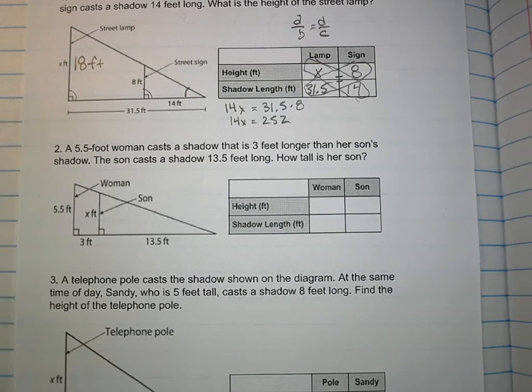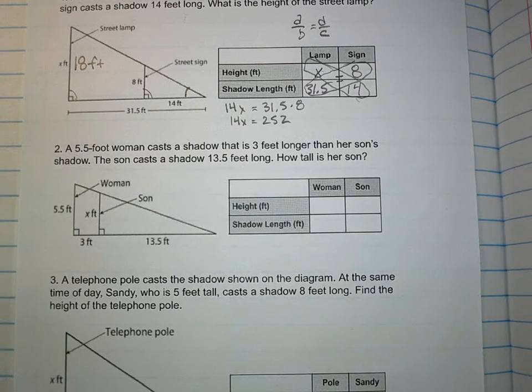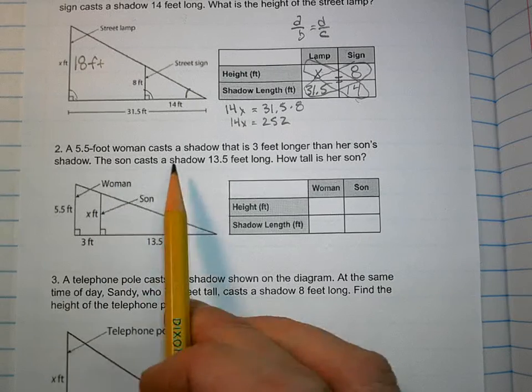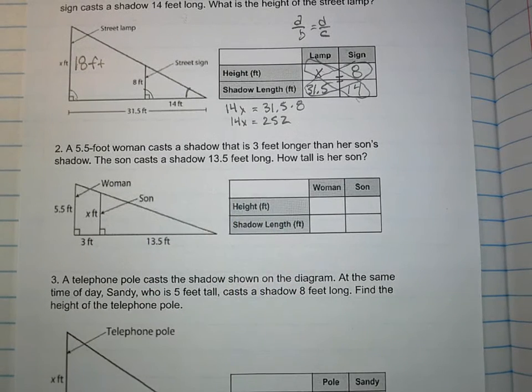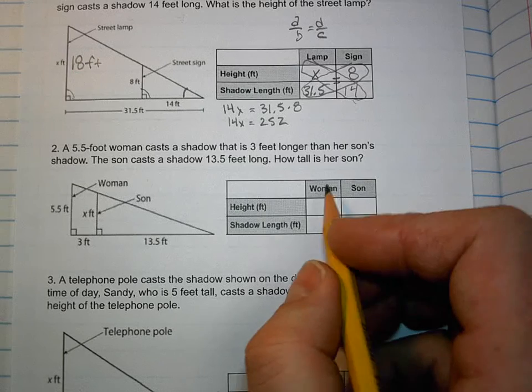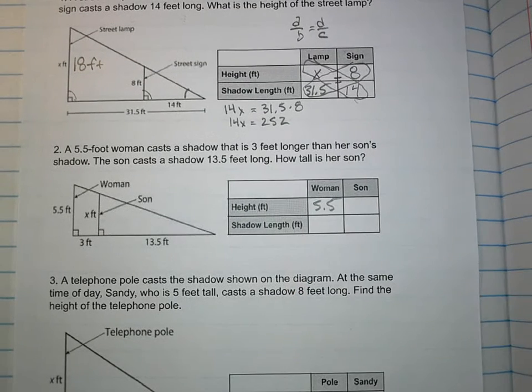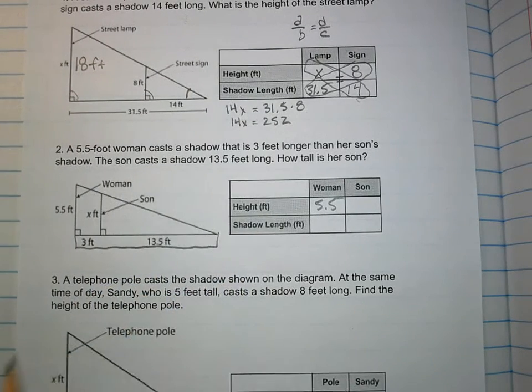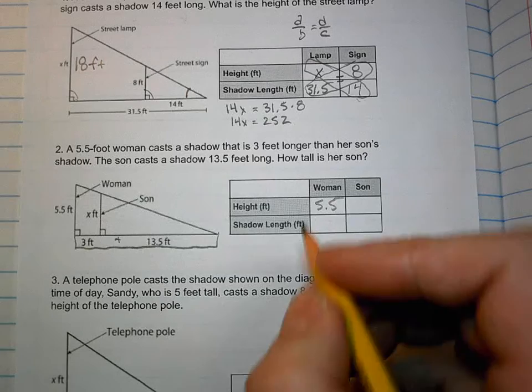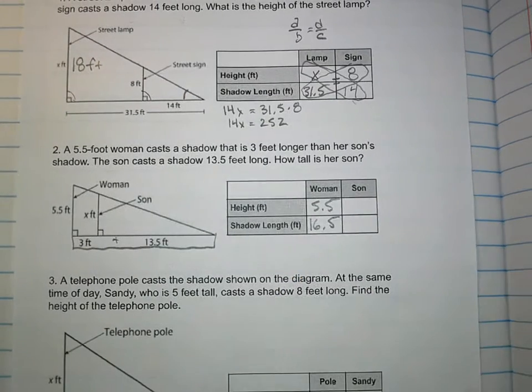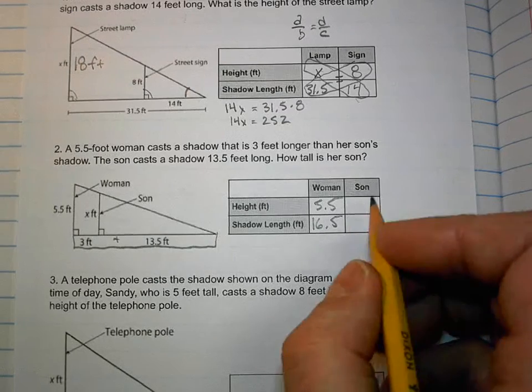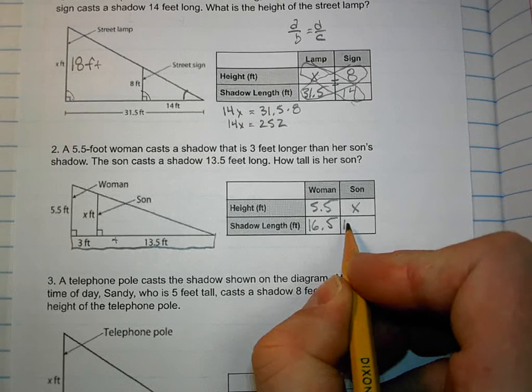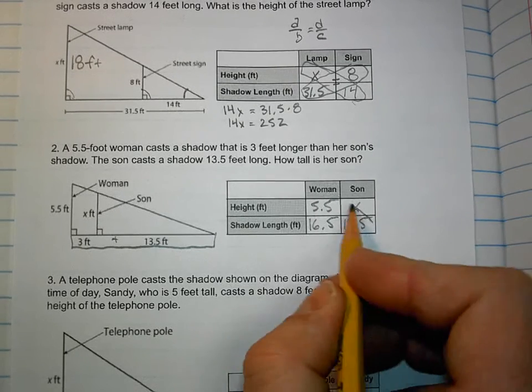So this side is 18 feet. Let's do this one down here. A 5.5-foot woman casts a shadow that's 3 feet longer than her son's shadow. The son casts a shadow that's 13.5 feet long. How tall is her son? Well, let's do it. How high is the woman? 5.5 feet. How long is her shadow? Pay attention. There are two here, aren't they? You've got to add these two together. Whatever it is. Remember, she's 3 feet longer than her son. Okay, so what's the height of her son? And this shadow? 13.5 feet. Do cross multiplication.